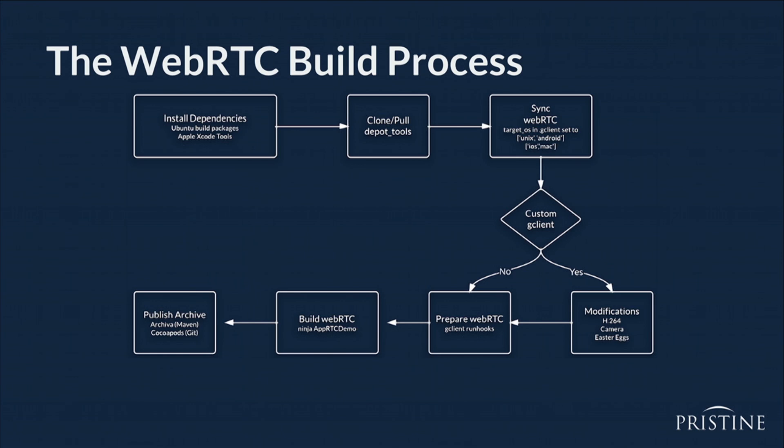Once we get Depot Tools set up, we need to sync WebRTC by setting the target platform to either iOS and Mac or Android and Unix. At that point we have an option — we can use a custom gclient file to add in changes like camera or H.264. Then we prepare WebRTC by running gclient runhooks. At that point we have all the makefiles in place and we can run Ninja AppRTC demo, which will build all the native code for AppRTC demo. This ensures we don't try to compile code that's not built for the right target. You can then publish this archive into either an archival repo or CocoaPods for an Android or iOS developer to pull down.